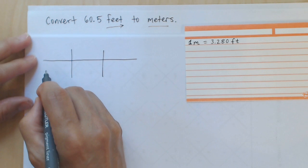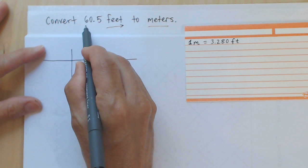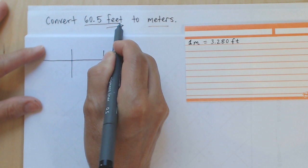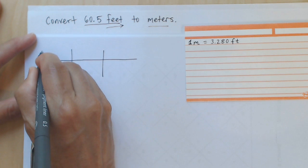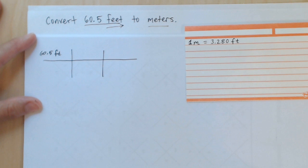The way you do this is you start in the upper left hand corner of the fence with the quantity to be converted. So we have 60.5 feet that we're going to convert. I'll write 60.5 feet and abbreviate feet as ft.